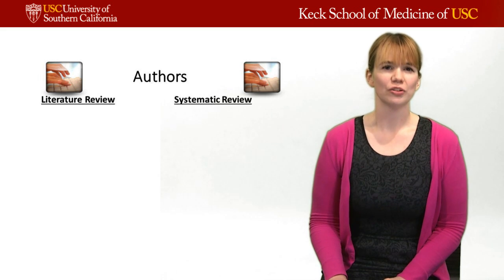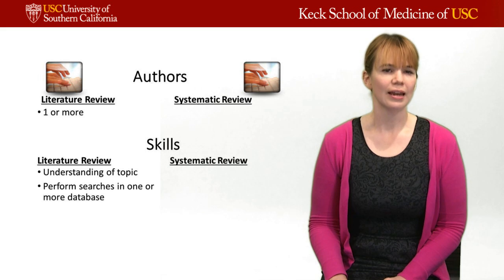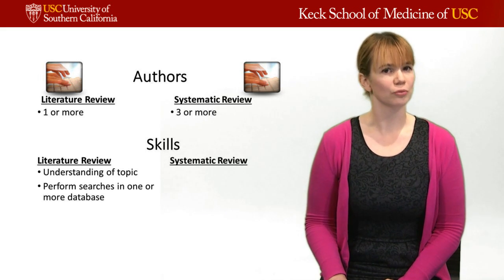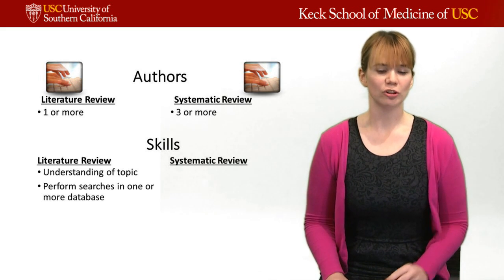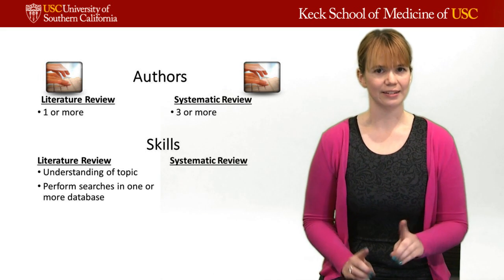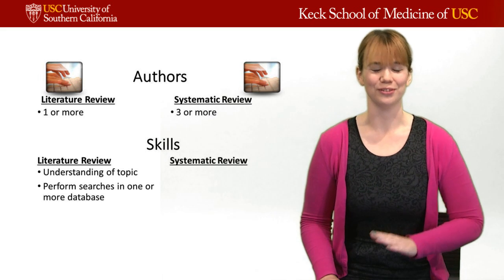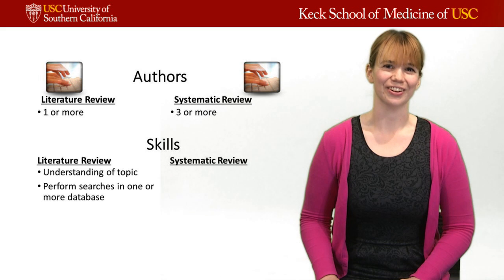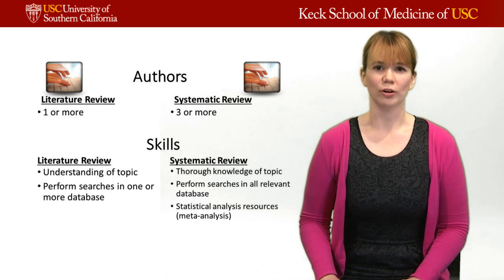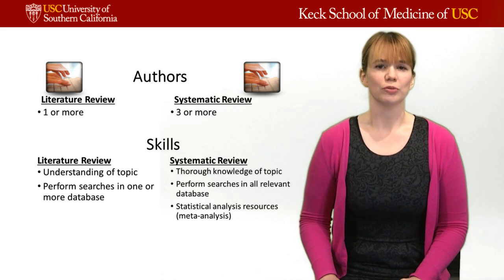For authors: a literature review really just needs one person, though they can ask others for help. Their skills include an understanding of the topic and performing searches in one or more databases. A systematic review, on the other hand, requires three or more people. The number three is important because two people independently go through all articles to decide what's included or not, compare results, and if there's any disagreement the third person arbitrates. The skills needed include a thorough knowledge of the topic, searching all relevant databases, and if planning a meta-analysis, statistical skills as well.